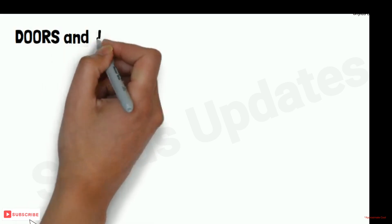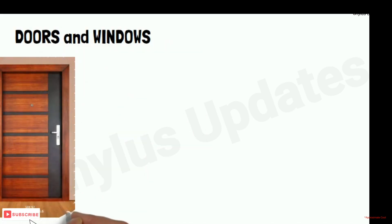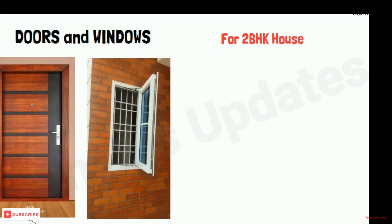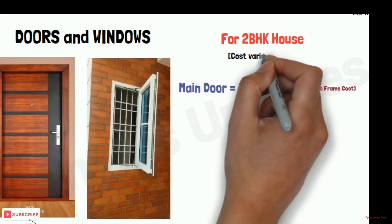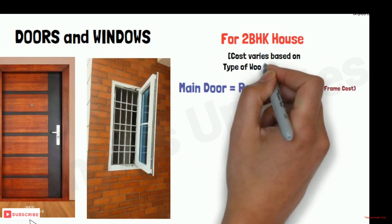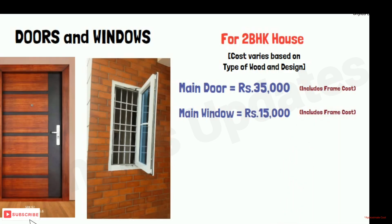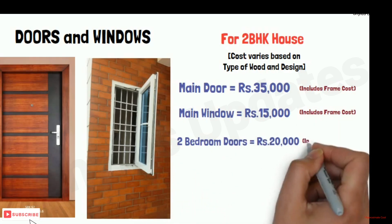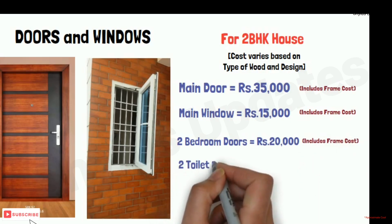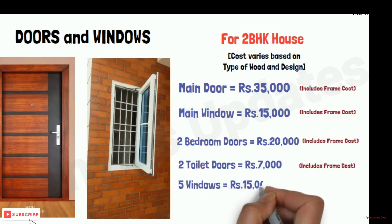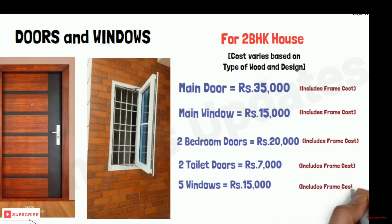For a 2BHK house, the main door cost is rupees 35,000 which includes frame cost. These costs vary based on type of wood and design. Main window costs rupees 15,000 including frame cost. Two bedroom doors cost rupees 20,000 including frame cost. Two toilet doors cost rupees 7,000 including frame cost. Five windows cost rupees 15,000 including frame cost. Two ventilators cost rupees 3,000 including frame cost.